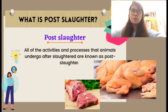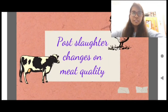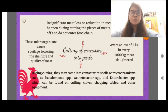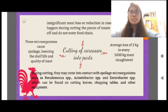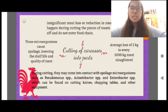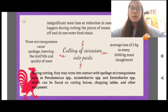Post-slaughter means all the activities and processes that the animal undergoes after slaughter. Regarding post-slaughter changes on meat quality: cutting of the carcasses into parts can result in significant meat loss or reduction of meat quality. Meat may fall off and not enter the food chain, with an average loss of approximately 2 kg per every 100 kg of meat. During cutting, meat may also come into contact with spoilage microorganisms such as Acinetobacter, which can be found on cutting knives, chopping tables, and other equipment. These microorganisms cause spoilage and lower the shelf life and quality of meat.